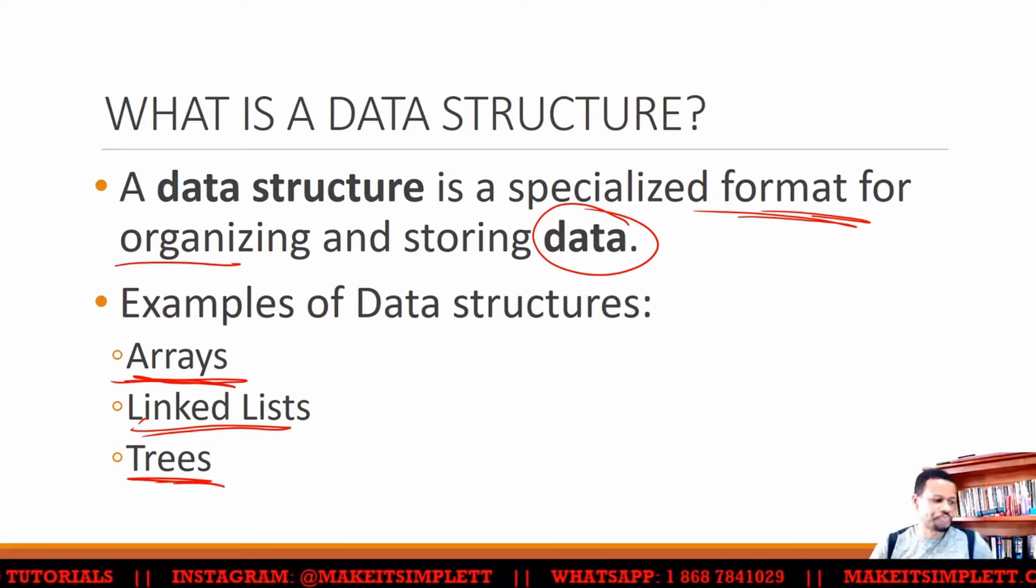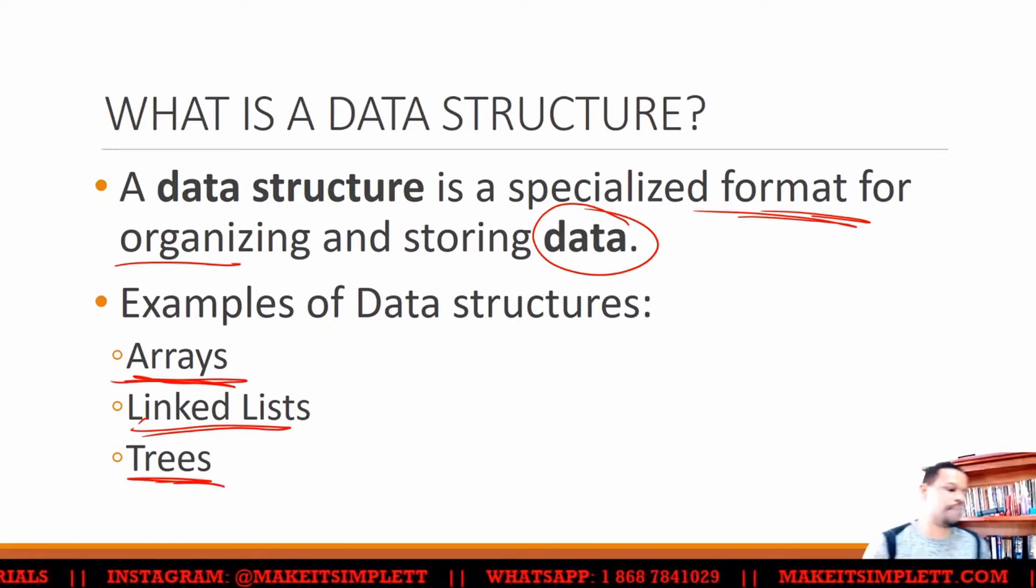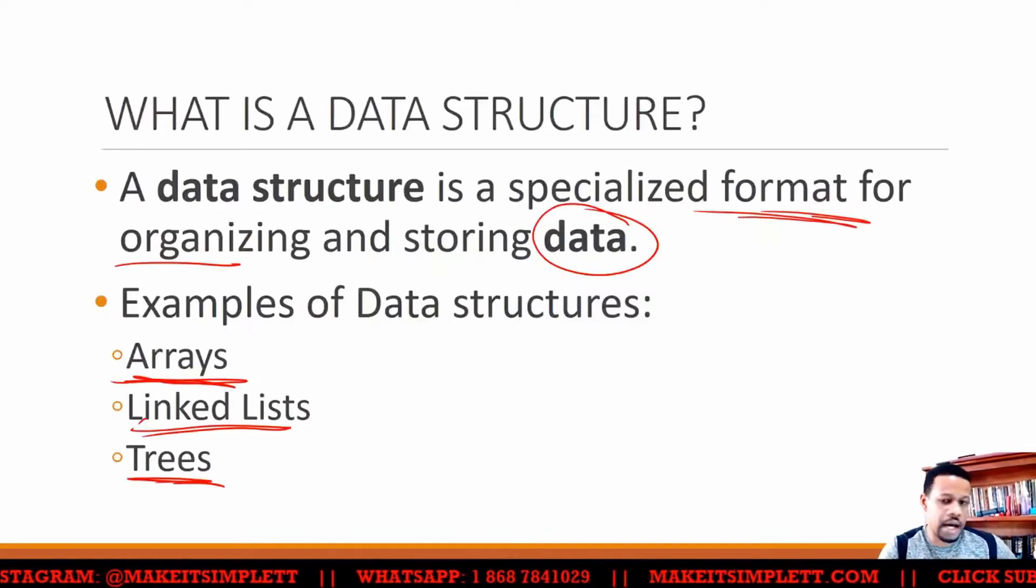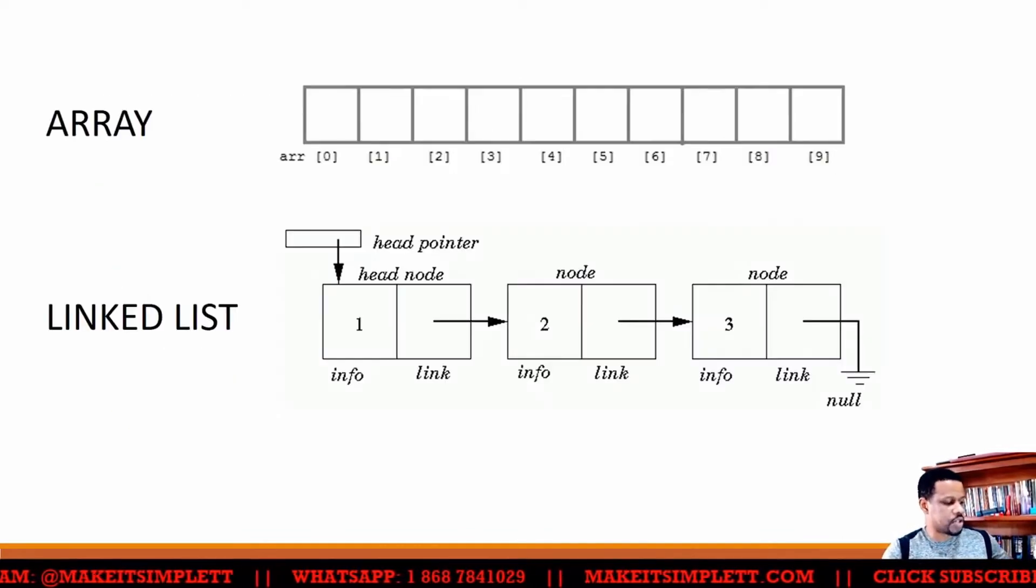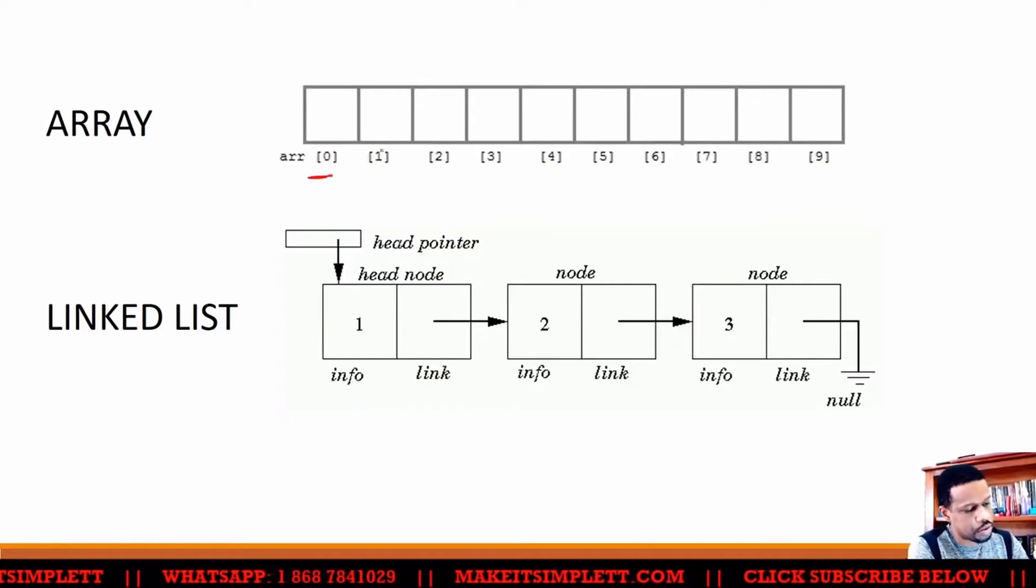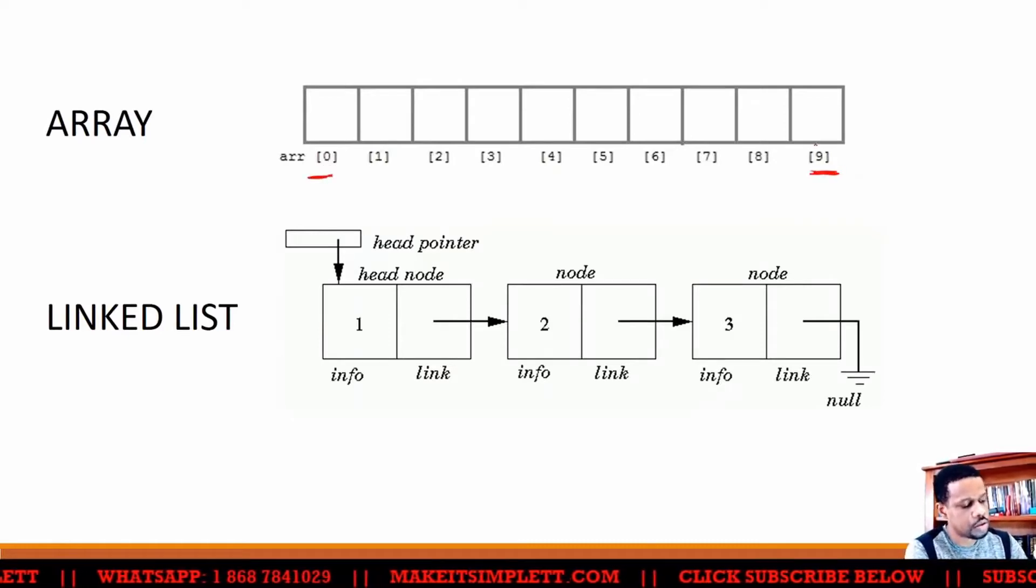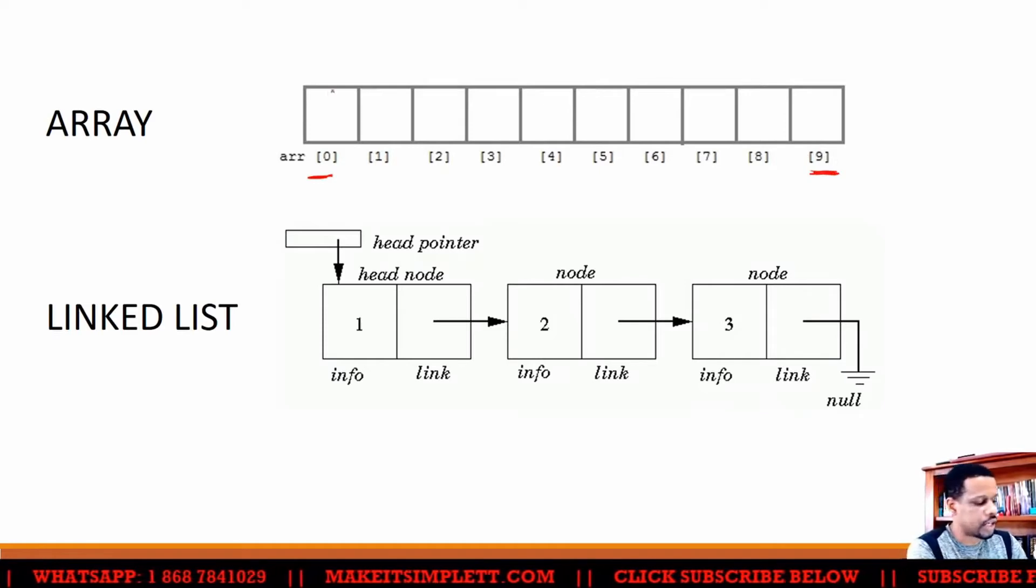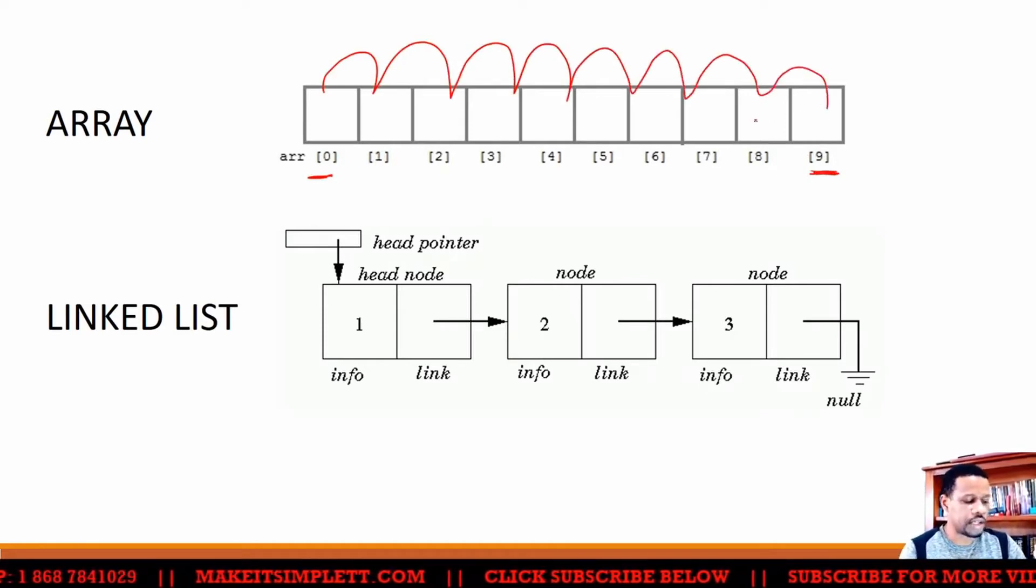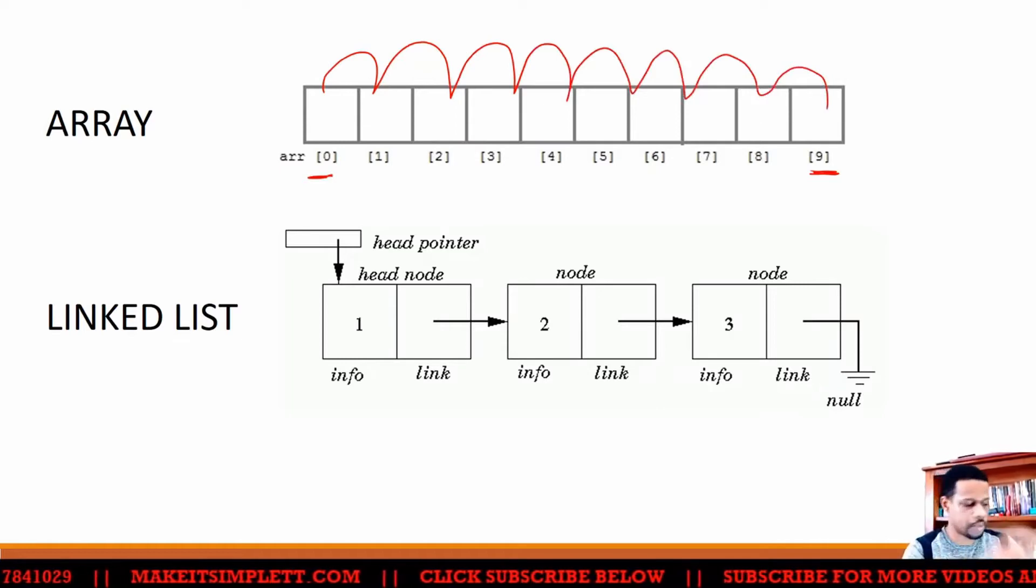Now, when you have a data structure, you could turn it into a particular data type, which is called an abstract data type. So how an array is structured is you'd have a location zero and then location whatever all the way up, and you would kind of switch through the array like normal with a linear switch or some kind of switch.